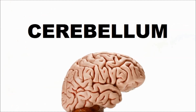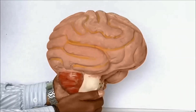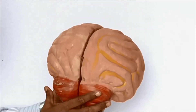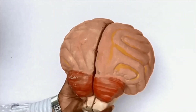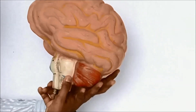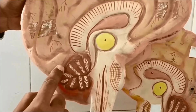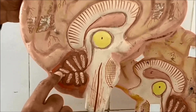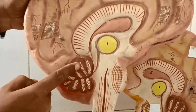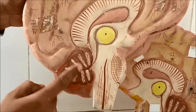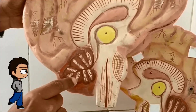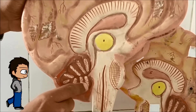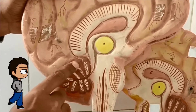The cerebellum is the second largest part of the brain, making up 10 to 15 percent of the total brain. It is divided into two hemispheres and internally into three lobes: the median vermis, the true lateral hemispheres, and a white leaf-like structure called the arbor vitae, or tree of life.